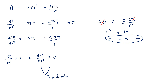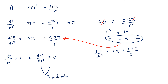We then verify that the second derivative is positive by substituting r = 8 into d²A/dr² = 4π + 512π/r³. Both terms are positive, so this confirms a positive value. Therefore, we can conclude that the surface area is minimum when the radius is 8 centimetres.